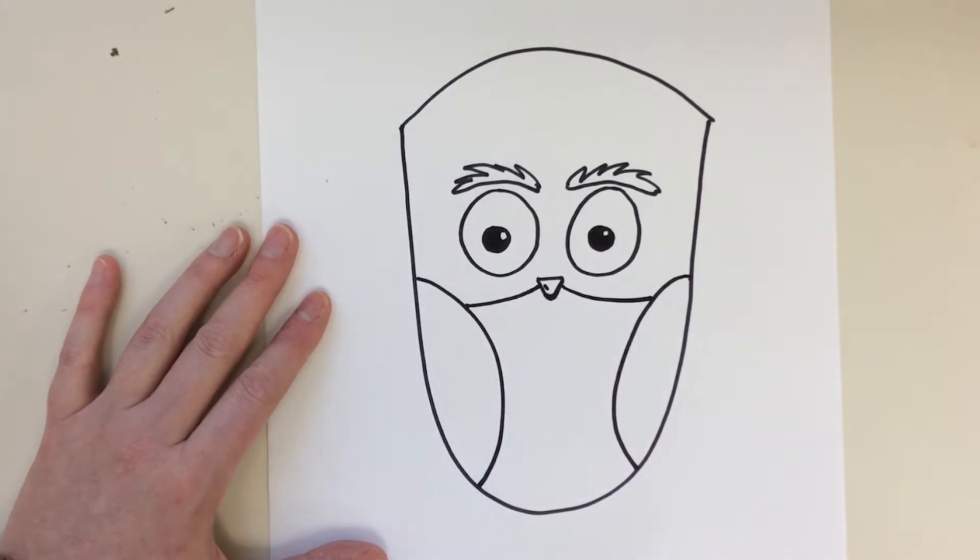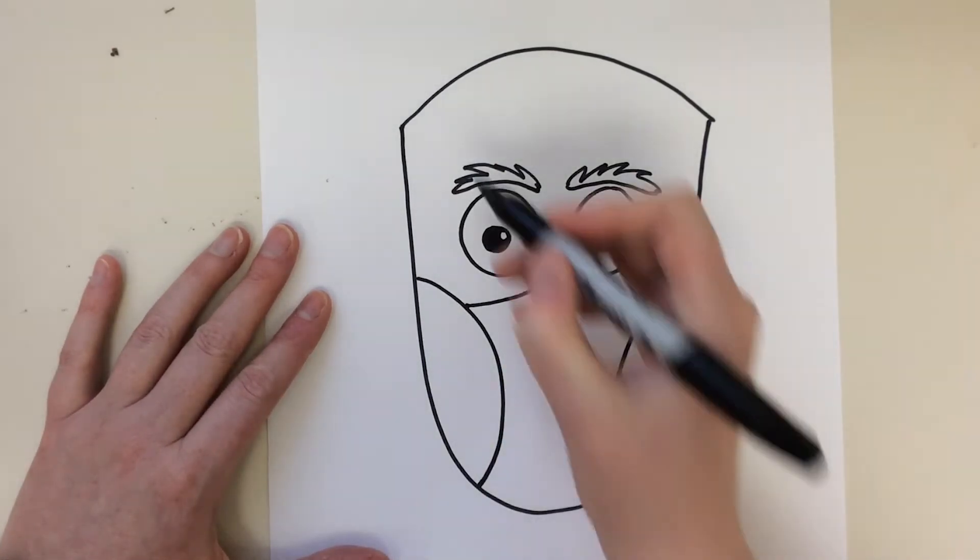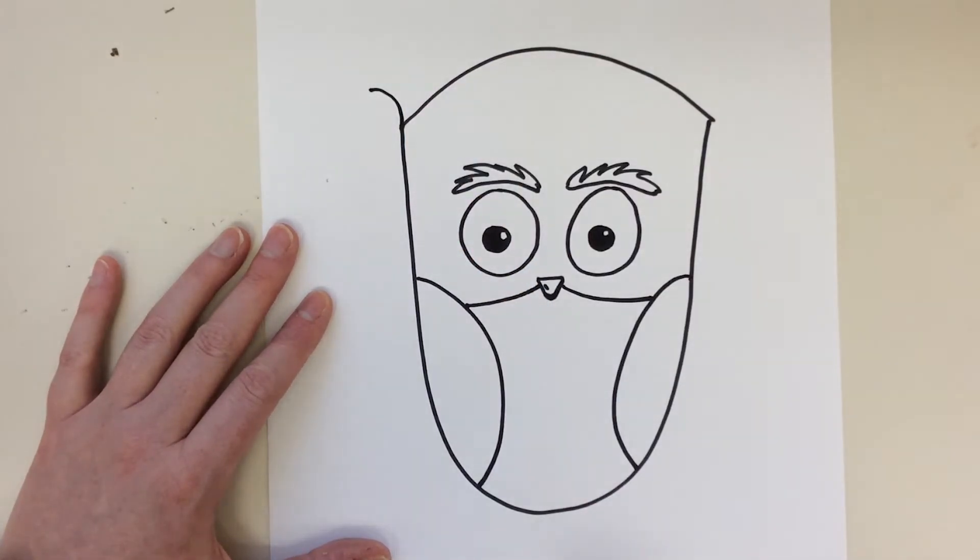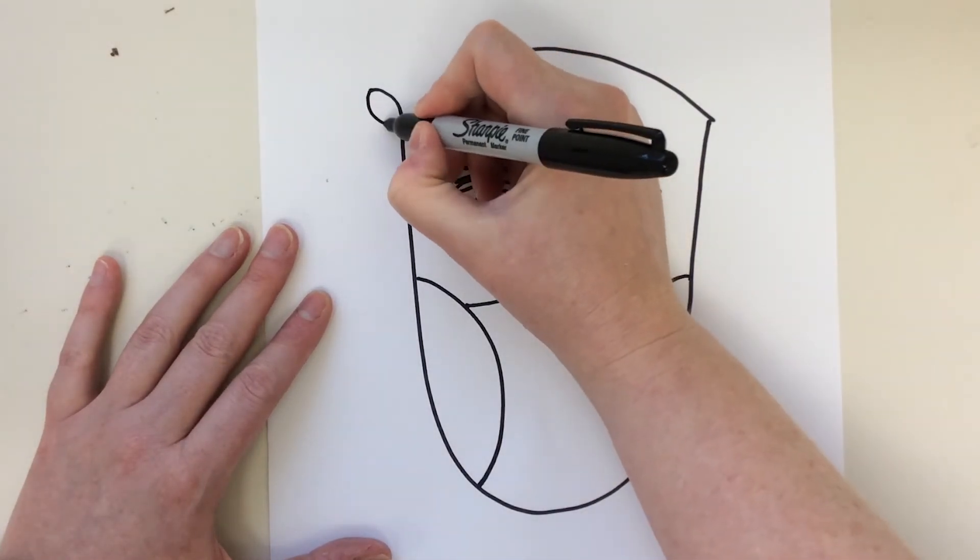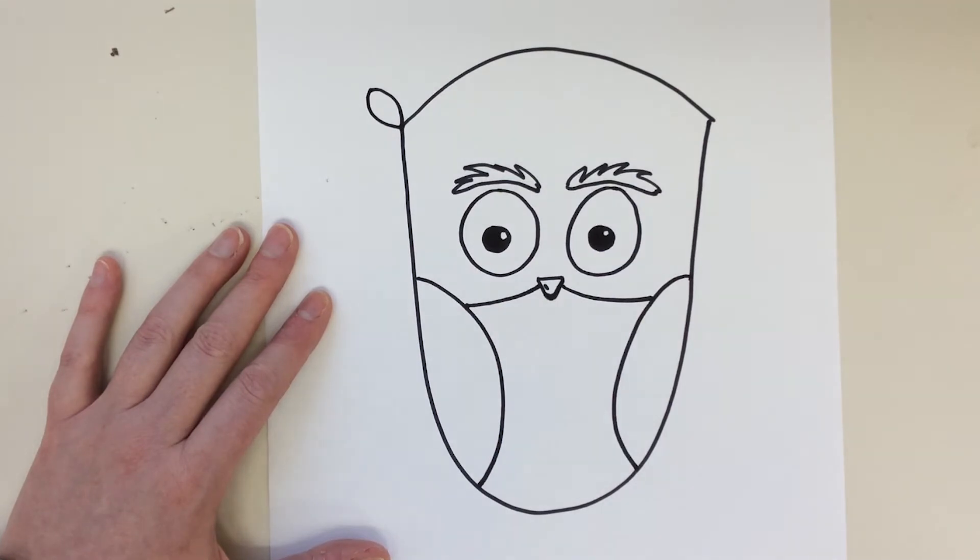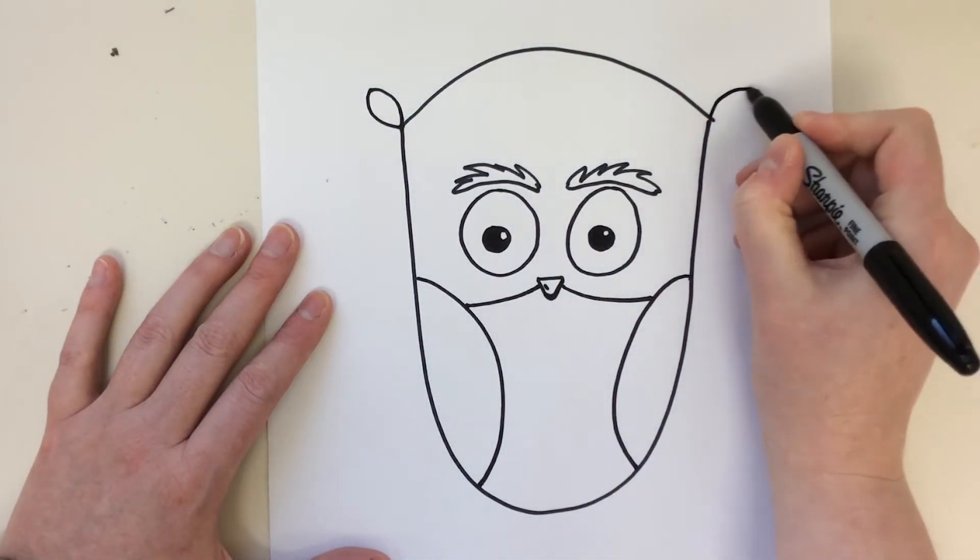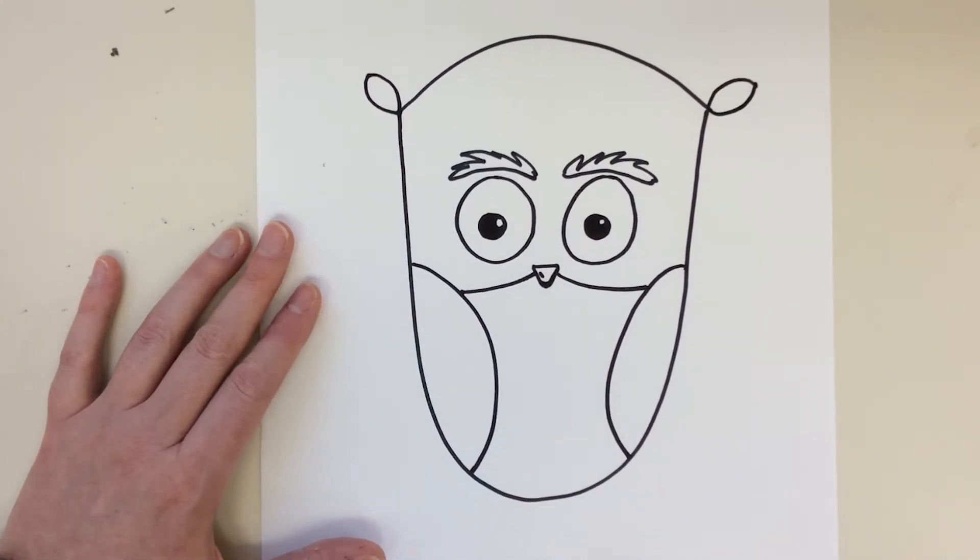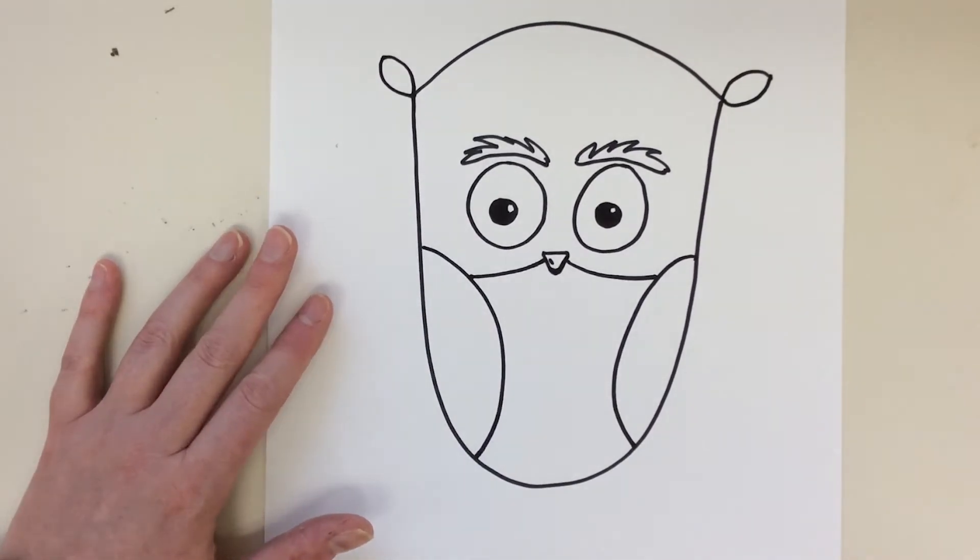I'm going to take a curved line up and a curved line down to make a little owl ear. Same thing on the other side, a curved line up and a curved line down to make another little owl ear. We're almost done guys.